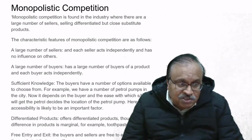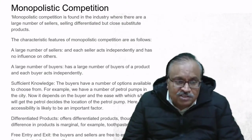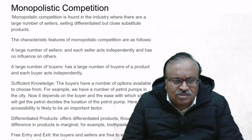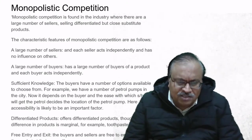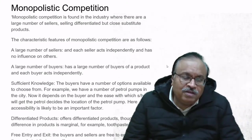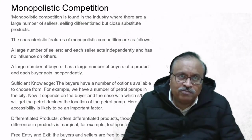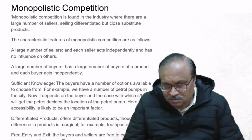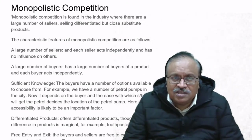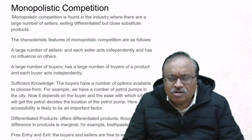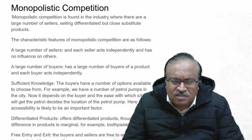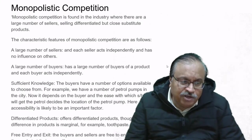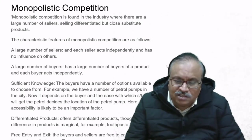Differentiated products: firms offer differentiated products, though the difference is marginal. For example, toothpaste from Colgate versus other companies—the basic contents remain the same; maybe the taste or fragrance is slightly different. Free entry and exit: buyers and sellers are free to enter and exit the market.